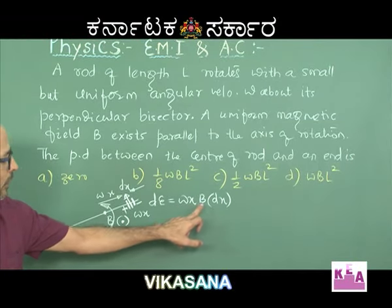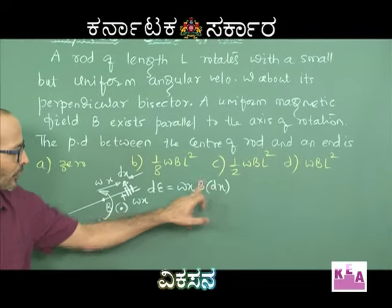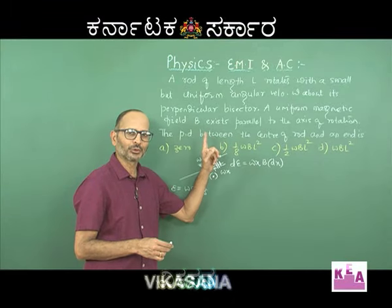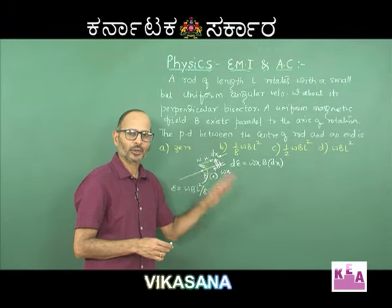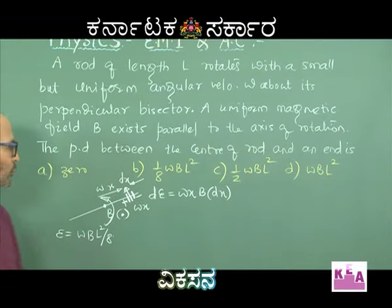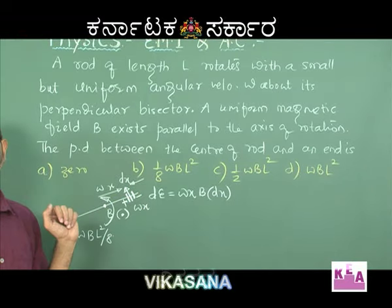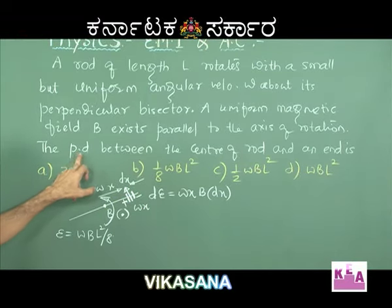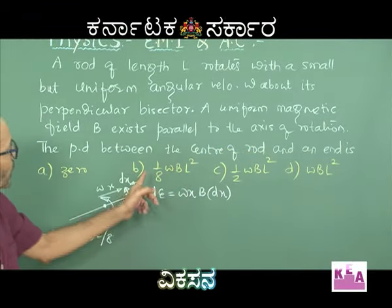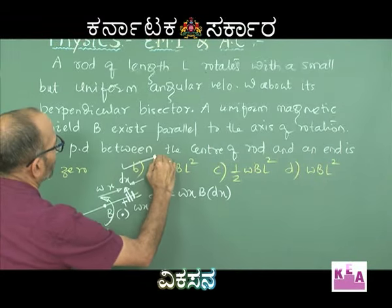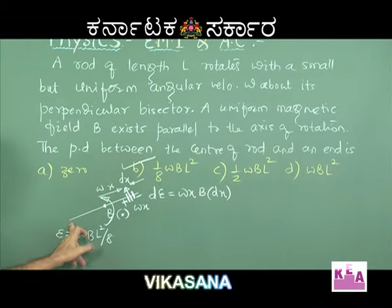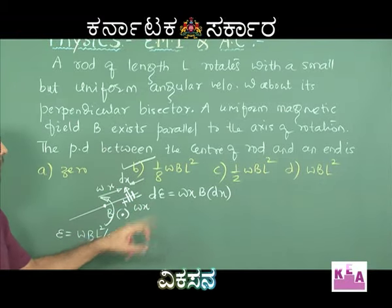So omega·B·L² divided by 8 is the EMF induced between the center of the rod and an end — that is option B. But please remember: had he asked for the potential difference between one end of the rod and the other end, the answer would have been 0.